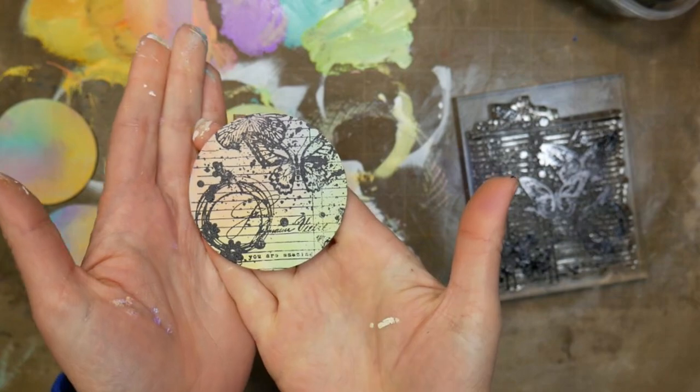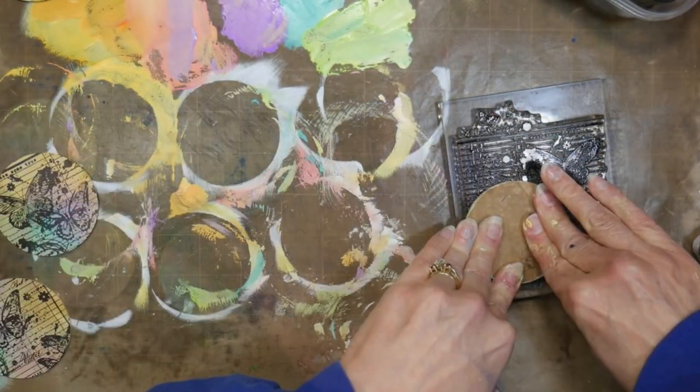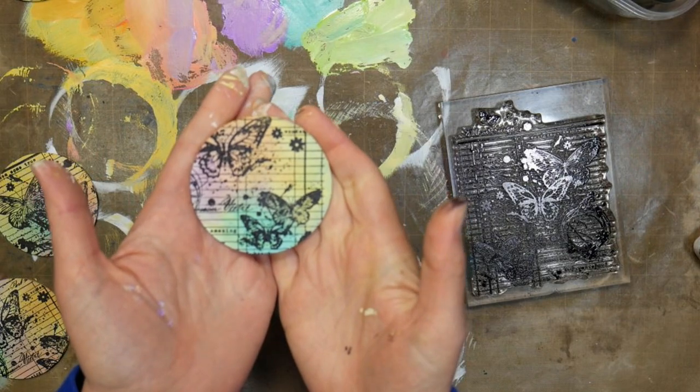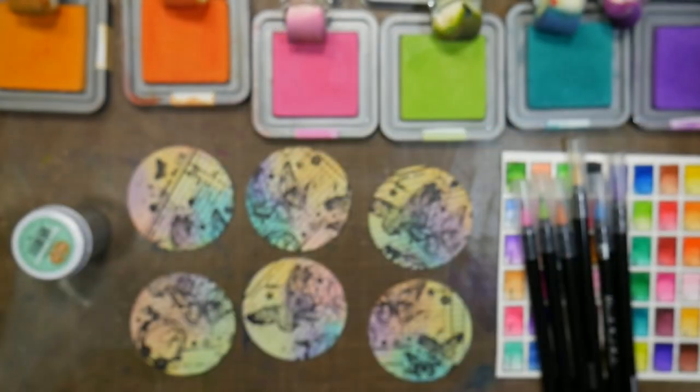I am re-inking each time just because I don't want to stamp on another part and end up going into an area that doesn't have ink on it, so each time I stamp I do re-ink.